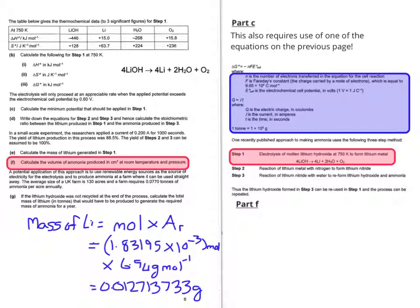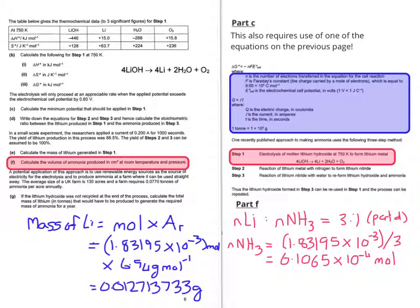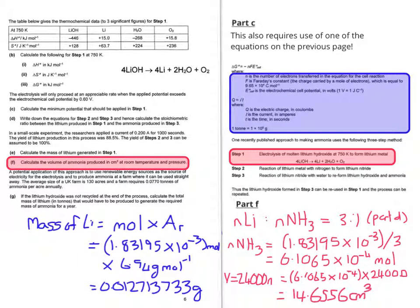Now in part F we need to work out the volume of ammonia produced at room temperature and pressure in centimeters cubed. Now from our earlier work in part D we were able to work out the number of moles of lithium to the number of moles of ammonia, that's 3 to 1. So applying that to our number of moles of lithium that gives us 6.1065 × 10⁻⁴ moles of ammonia. To convert that into a volume in centimeters cubed, you need to multiply that by 24,000, which gives us 14.6556 centimeters cubed.